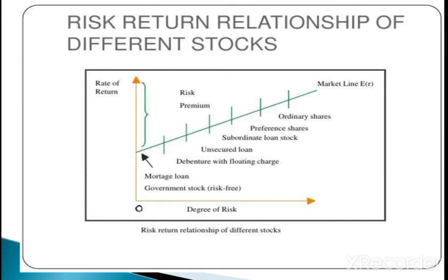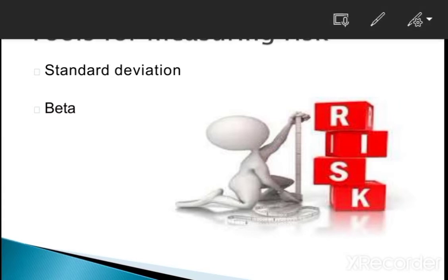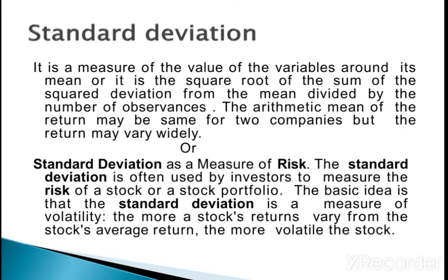Now, when we talk about the risk-return relationship for different stocks, as our return increases, our risk also increases. There are many types of financial avenues. When we talk about equity shares, the risk is higher as well as the return is very high. When we talk about how to measure this risk, there are two or three kinds of tools used. First is standard deviation — when we want to know about risk in a particular stock, we measure it with the help of standard deviation. When we have to talk about the full industry, we measure that kind of risk with the help of beta.